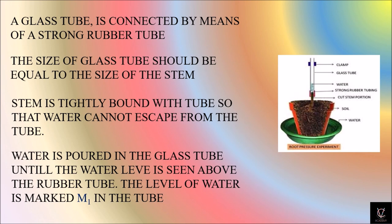Water is poured in the glass tube until the water level is seen above the rubber tube and the level of water is marked as M1 in the tube. M1 is above the level of the rubber tube in the glass tube.